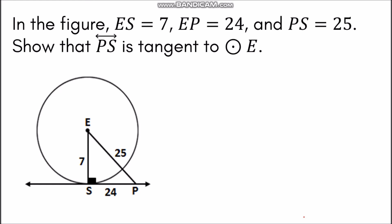In the figure, ES = 7, EP = 24, and PS = 25. Show that line PS is tangent to circle E. Since we want to prove that line PS is tangent to circle E, we need to show that segment ES is perpendicular to segment PS, so that we can use Theorem 102, the converse of the tangent line theorem. To do this, we will apply the Pythagorean theorem and check if both sides are equal.